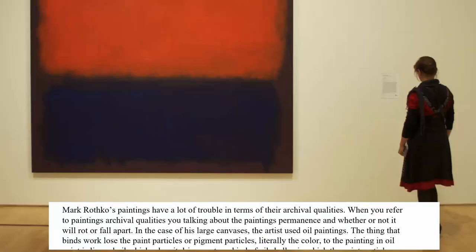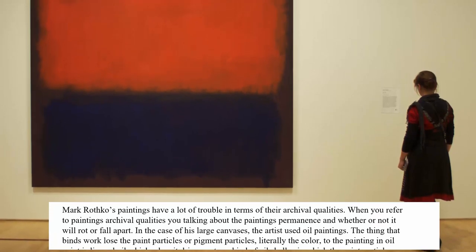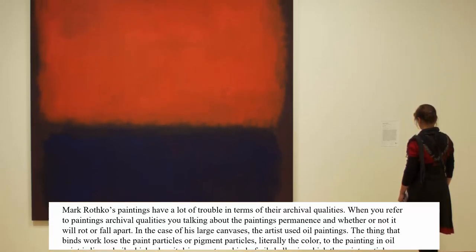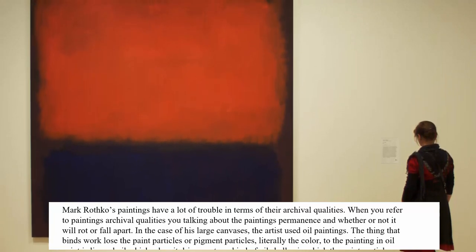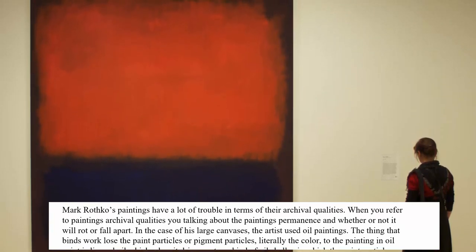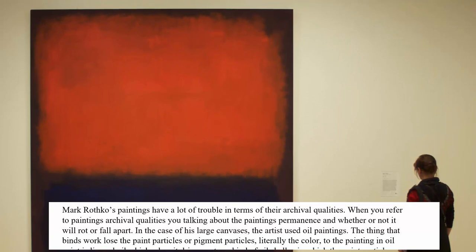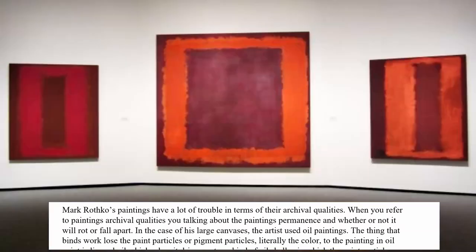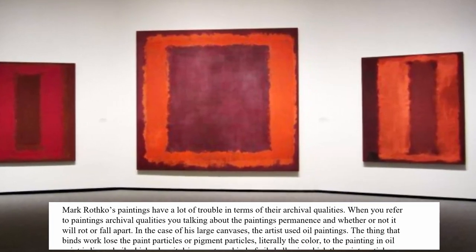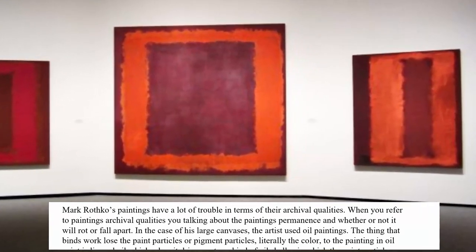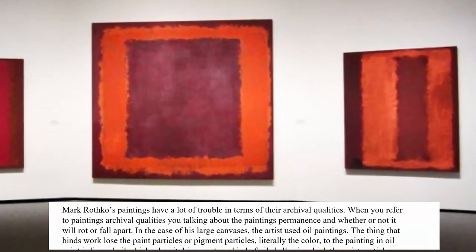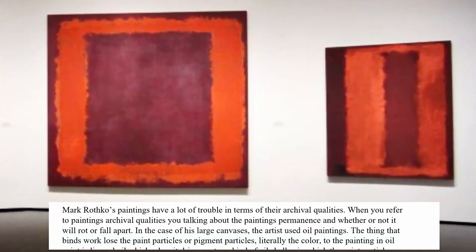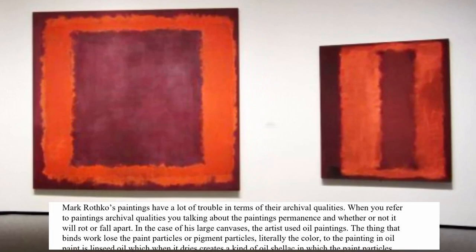Rothko's paintings have a lot of trouble in terms of being archival. When you refer to a painting's archival qualities, you're talking about how permanent it is, whether or not it's going to rot or fall apart. In the case of these big canvases, the artist used oil paint, and the thing that binds the pigment or the paint particles to the canvas is linseed oil.